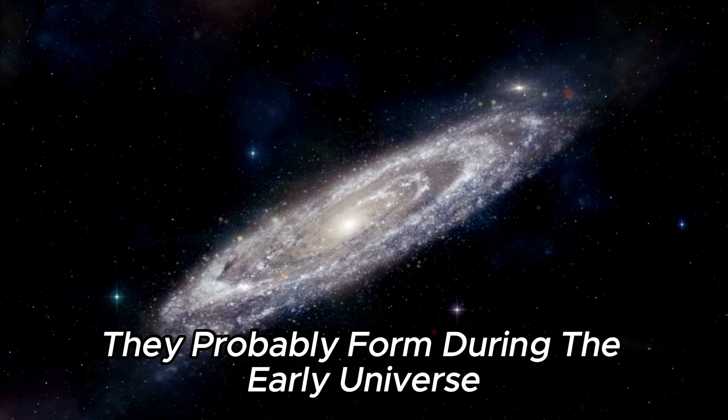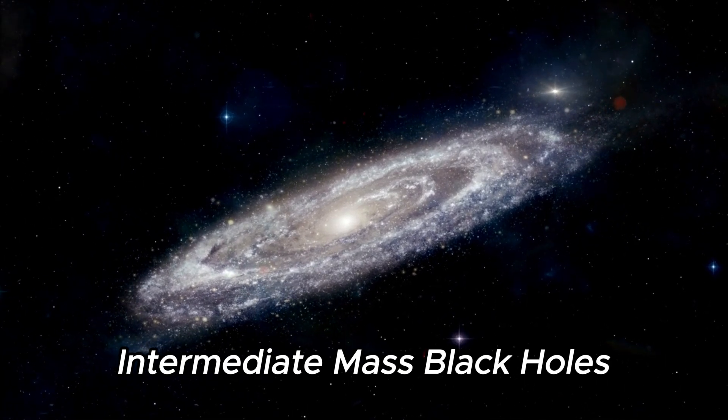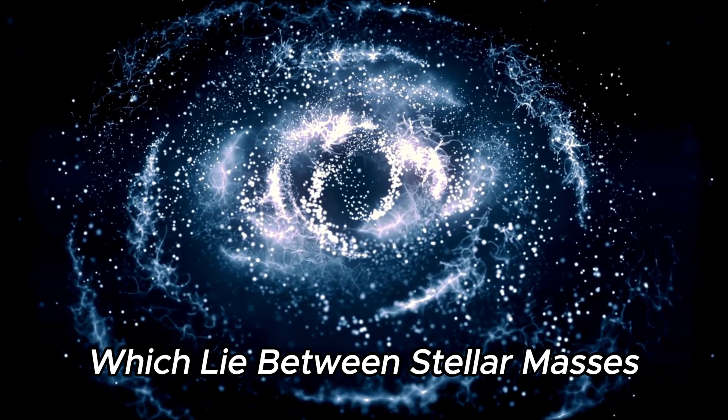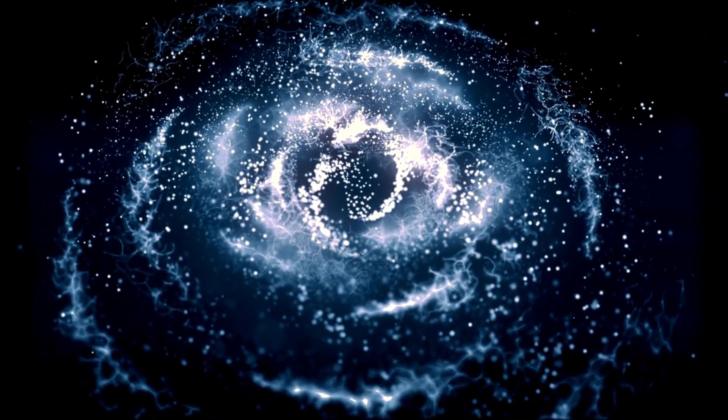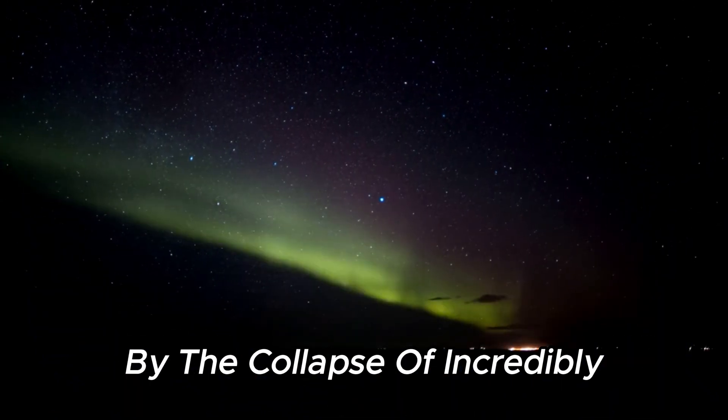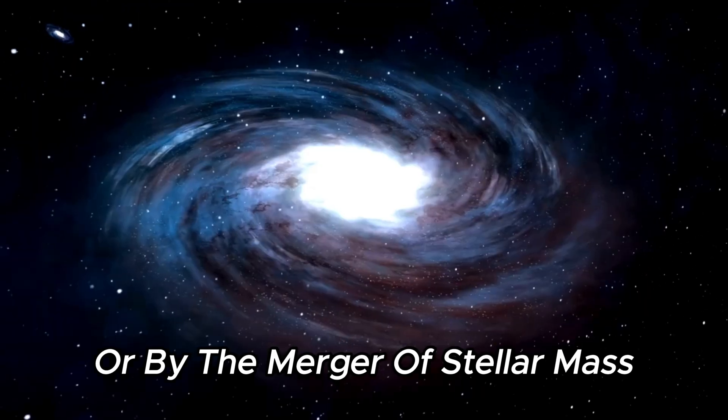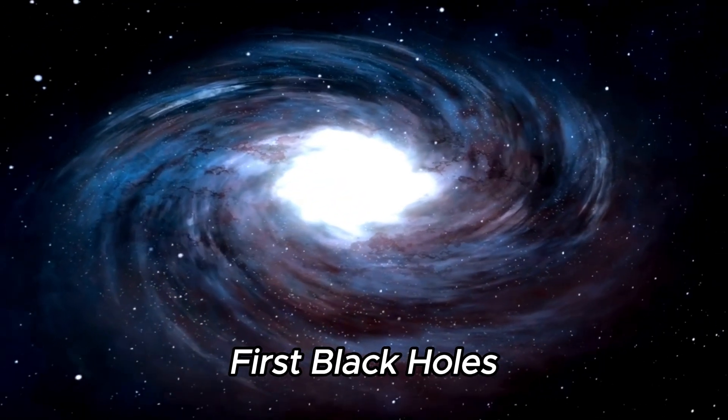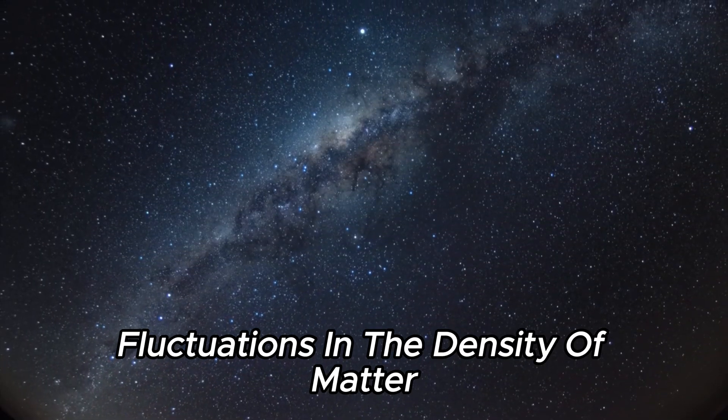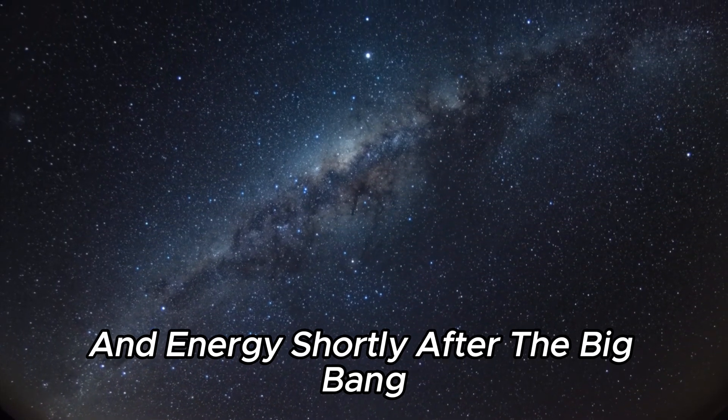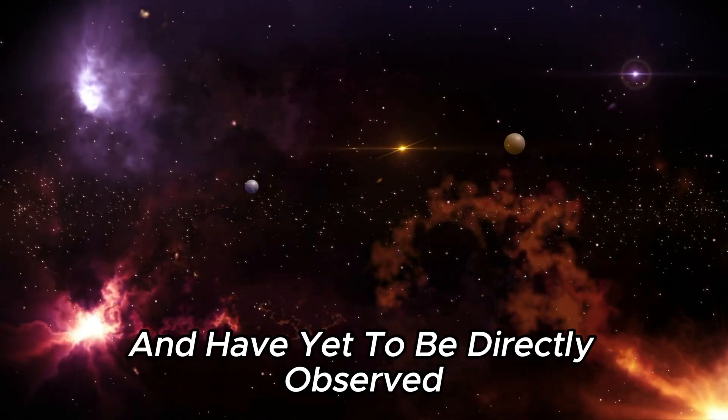They probably formed during the early universe from massive clouds of gas and dust, or from the merger of smaller black holes. Intermediate mass black holes, which lie between stellar masses and supermassive black holes, are somewhat mysterious and not often observed. Scientists speculate that they may have been formed by the collapse of incredibly massive stars during the early cosmic ages, or by the merger of stellar mass black holes in dense star clusters. First black holes, possible remnants of the beginning of our universe, may have formed from fluctuations in the density of matter and energy shortly after the Big Bang. They range in size from tiny to massive, but are hypothetical and have yet to be directly observed.